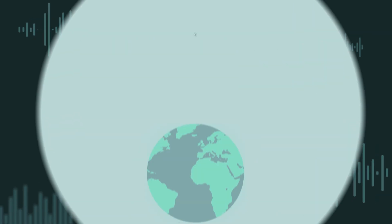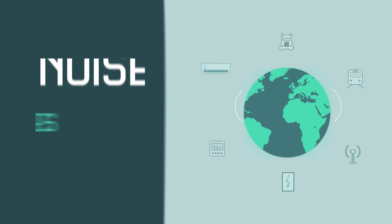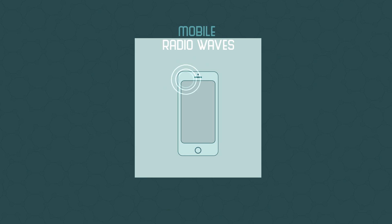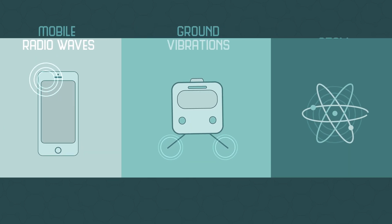This is audio noise, but the world is filled with other forms of noise that interfere with experiments. Radio waves from mobile phones, vibrations from the ground, and even the tiny vibrations of atoms caused by heat.